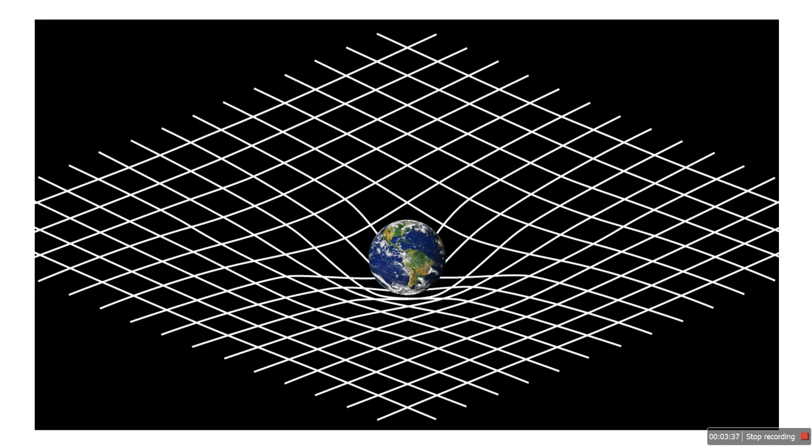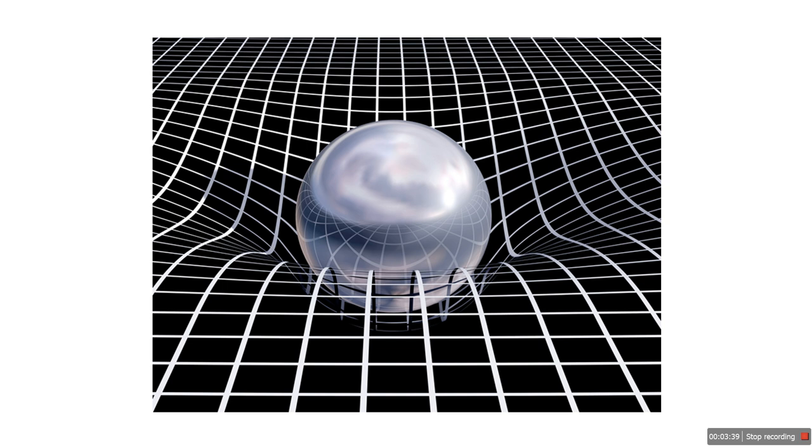General relativity isn't just a theory, it's a cosmic masterpiece. It explains why planets orbit stars, how time behaves near massive objects, the existence of black holes and gravitational waves or ripples in space-time caused by massive cosmic events. It reshaped our understanding of the universe, showing that space and time are dynamic and intertwined, responding to the presence of matter and energy.